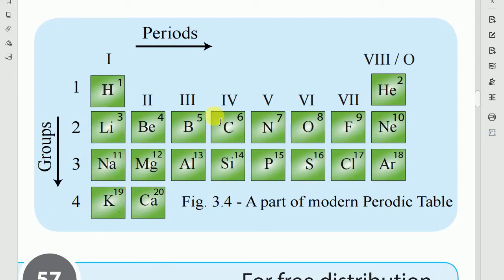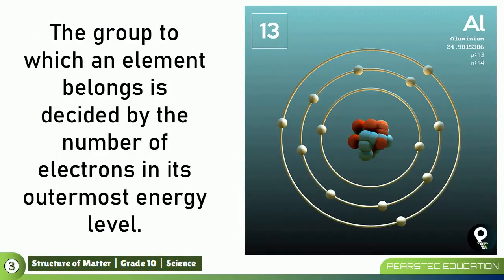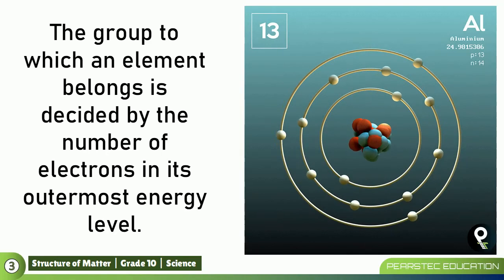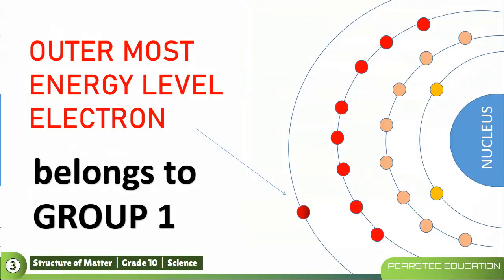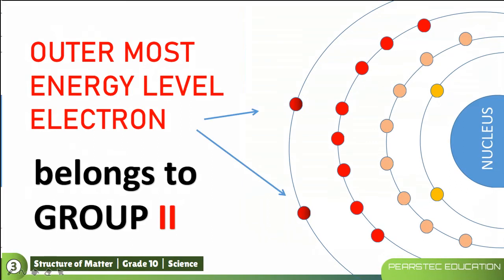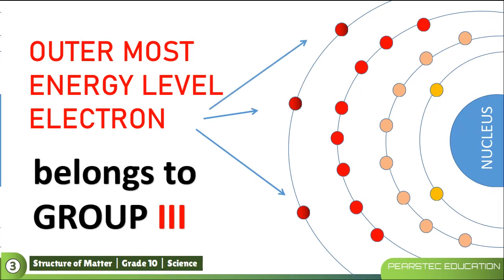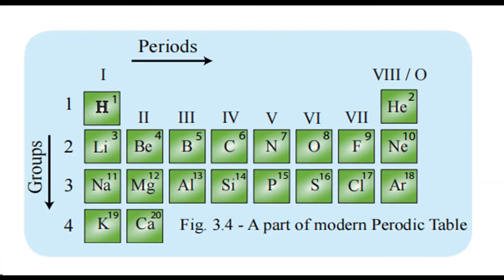Boron and aluminum are in the same group. They share similarities and lots of differences as well. The group to which an element belongs is decided by the number of electrons in its outermost energy level. If the number of electrons in the outermost energy level is one, it belongs to group number one. If the element has two electrons in the outer energy level, it belongs to group two. If it is three, it belongs to group three.